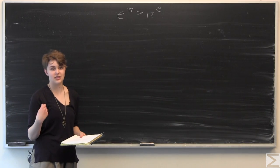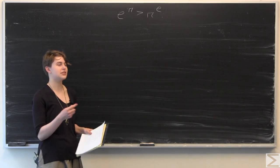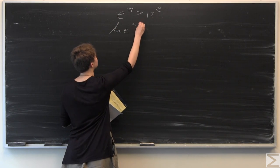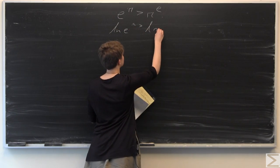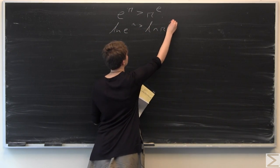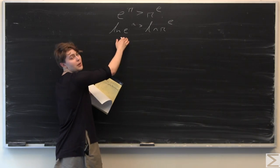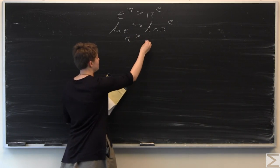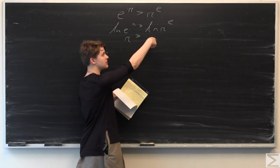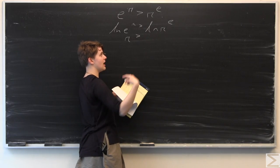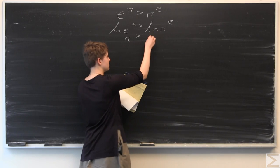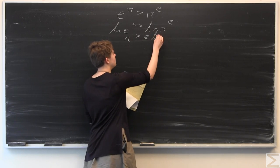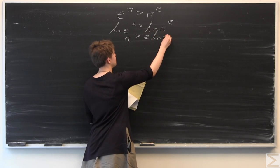The first thing we're going to do is take the natural log of both sides. So we take ln of e to the pi is greater than ln of pi to the e. ln of e to the pi is just going to be pi, and that is going to be greater than — by the properties of logarithms, the exponent comes down in front — so we have pi is greater than e times ln of pi.